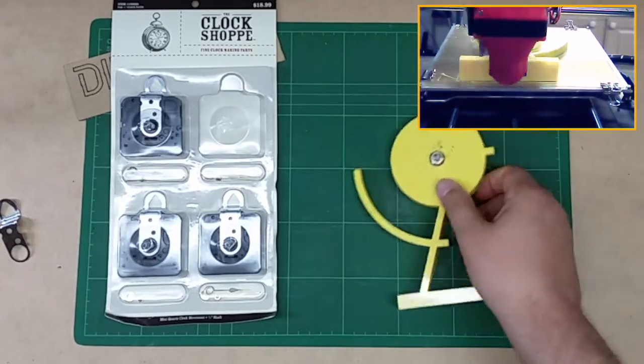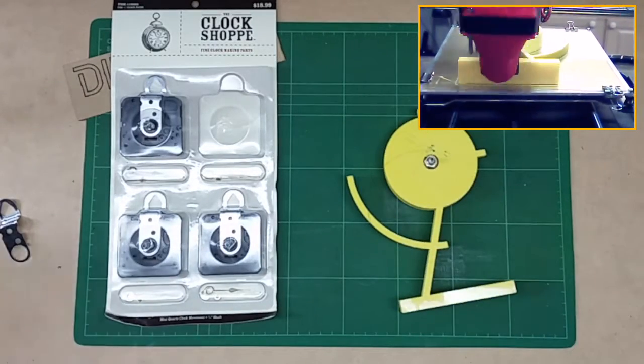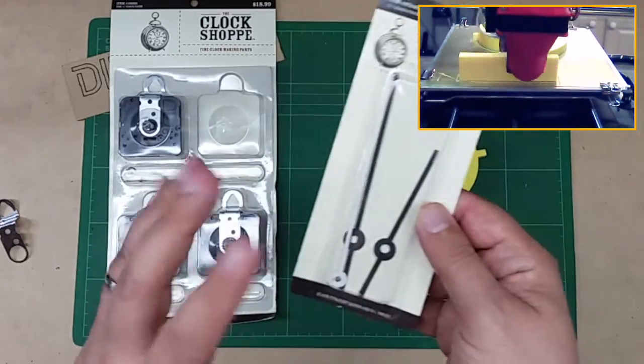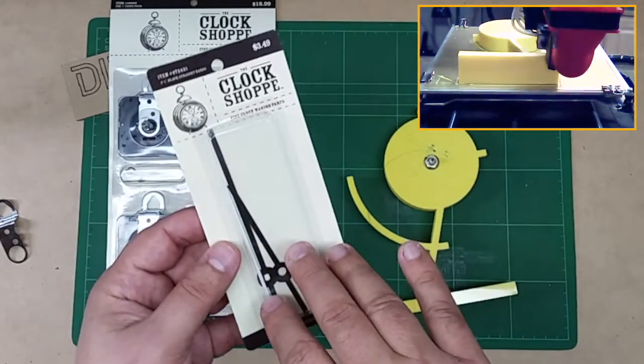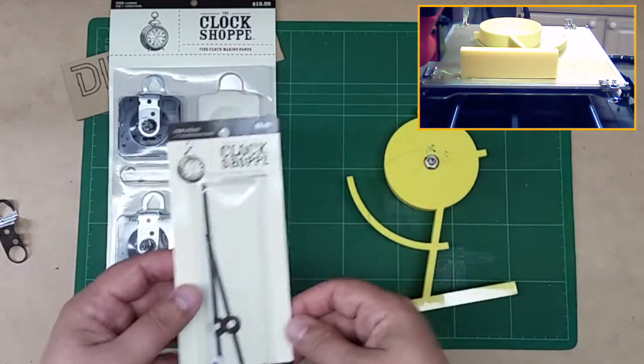And then what you do is put the hands on. Now, what I did, I'd like a bit more modern look. These come with smaller ones. I've got these hands. And actually what I'm going to do is in a future video, I'm going to show you how to actually make your own hands. So you can do some custom work.